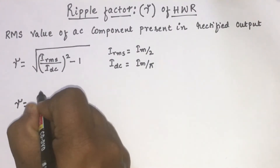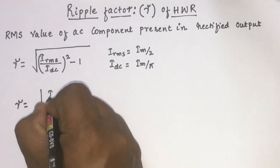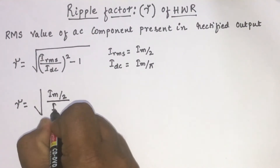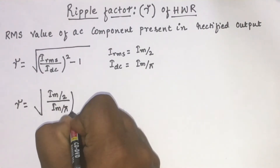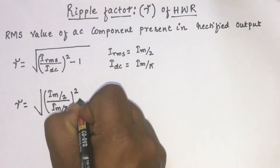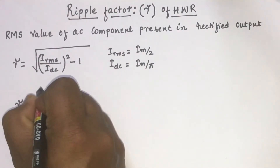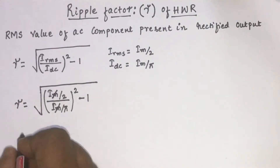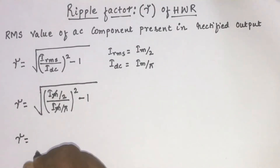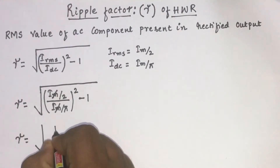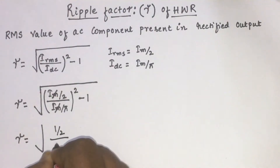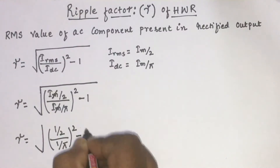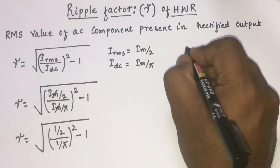Ripple factor is equal to square root of (I_m/2 divided by I_m/π) whole squared minus 1. Now we can cancel out I_m in these two terms. We will get ripple factor is equal to square root of (1/2 divided by 1/π) whole squared minus 1, which can be written as square root of (π² divided by 4) minus 1.